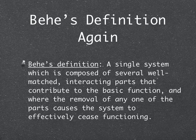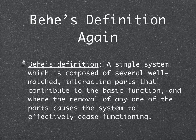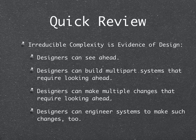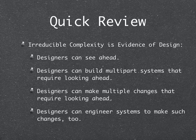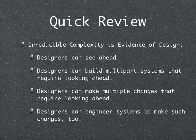So here's Behe's definition again: it's a single system which is composed of several well-matched, interacting parts that contribute to the basic function, and where the removal of any one of the parts causes the system to effectively cease functioning. So why is this evidence of design? It's because designers can see ahead. Designers can build multi-part systems that require looking ahead to the finish while it's in progress, and can make multiple changes that require looking ahead. For example, if you've ever done remodeling on your house, you know that while it is in construction, it is not currently functional. Designers can also engineer systems to make such changes automatically, which we'll cover in the next video.